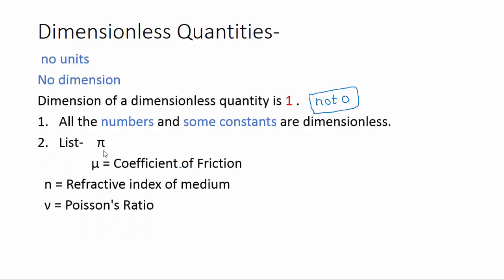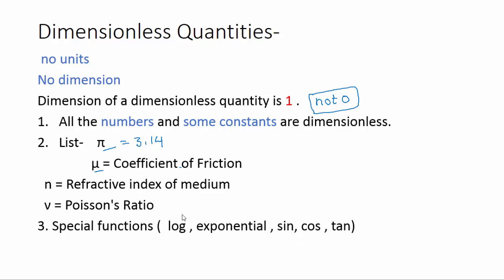Here is a list of dimensionless constants: pi (value 3.14, no unit, no dimension), coefficient of friction mu (no unit, no dimension), refractive index of a medium, and Poisson's ratio — these also have no units and no dimension. Spatial functions like log, ln (base 10), exponential (e raised to the power x), and all trigonometric functions like sin θ, cos θ, tan θ are all dimensionless.